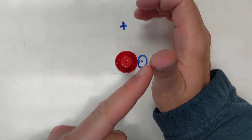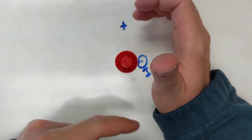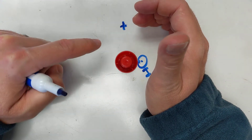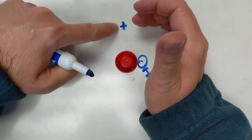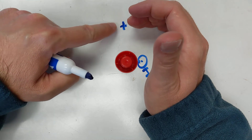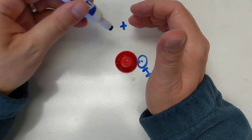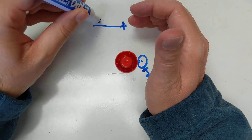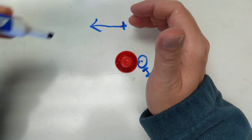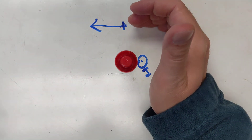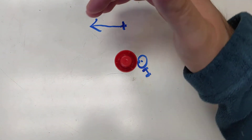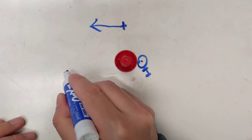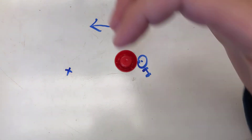It points up towards you, and then I curl my fingers of my right hand. At this point my fingers point this way — this is the direction of B.